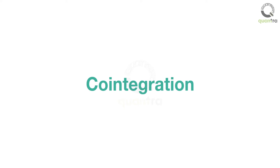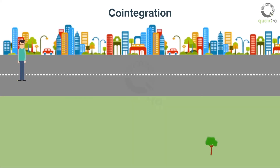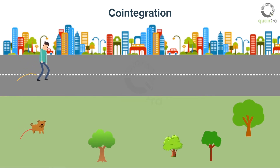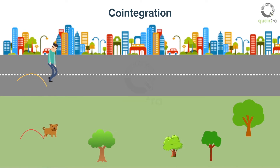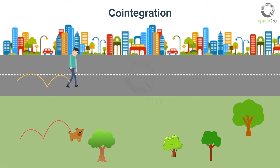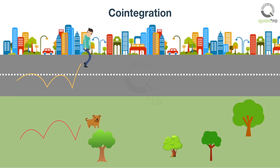To intuitively understand the concept of co-integration, consider this example of a drunk man walking with his unleashed pet dog. The drunkard and his dog are good examples of random walks, as both seem to be roaming around in a seemingly aimless manner. The paths of the drunk man and the dog can be referred to as non-stationary or random walks.